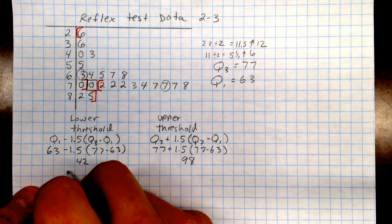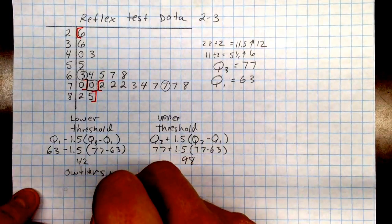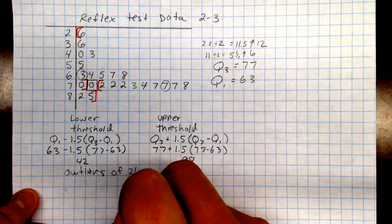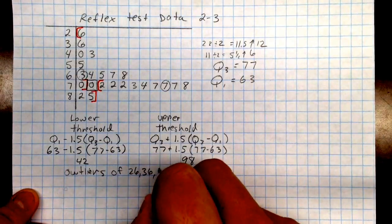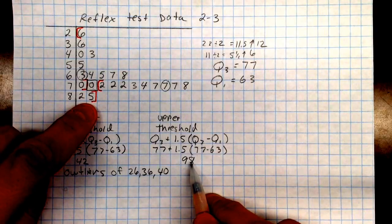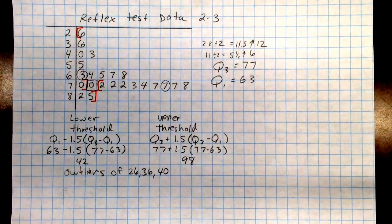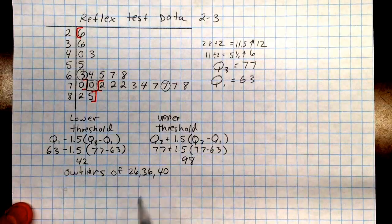So on this end, we have outliers of 26, 36, and 40. On the upper end, our highest number is 85, which does not exceed the 98, which means we did not have an outlier in the upper end. So only outliers on the low end in this one.